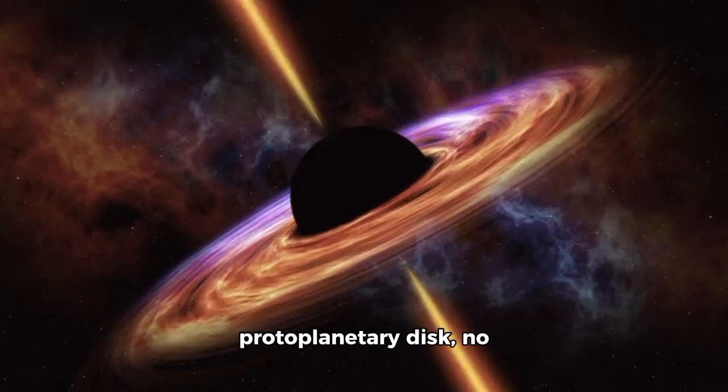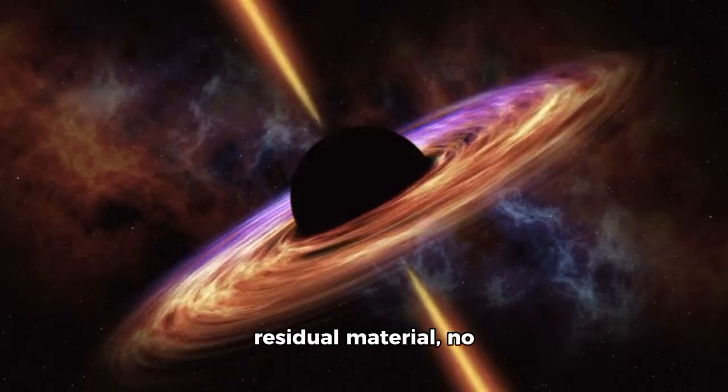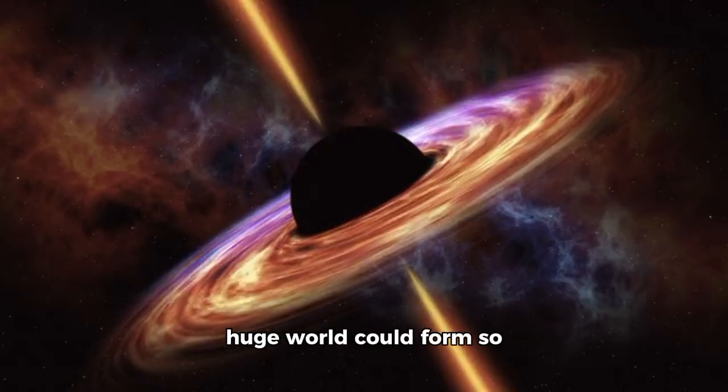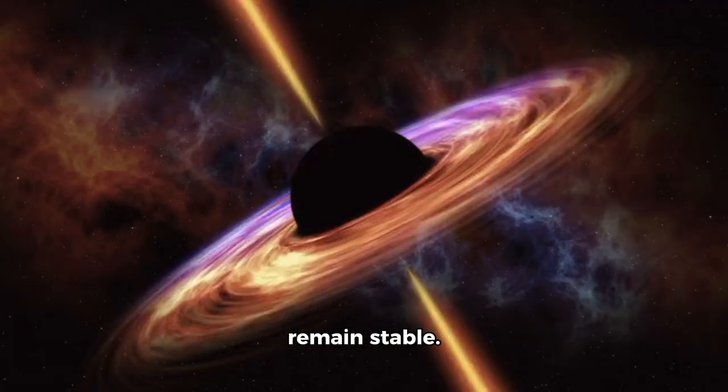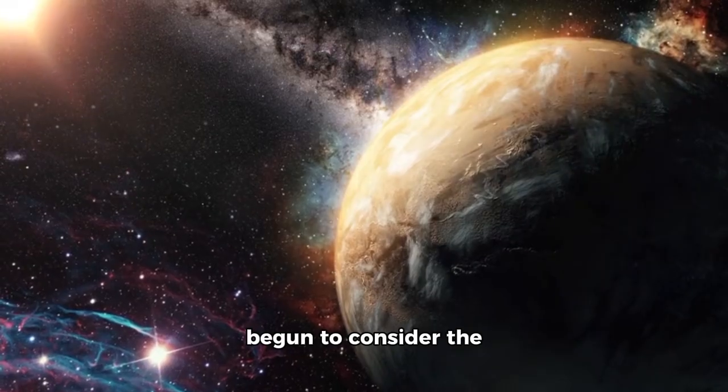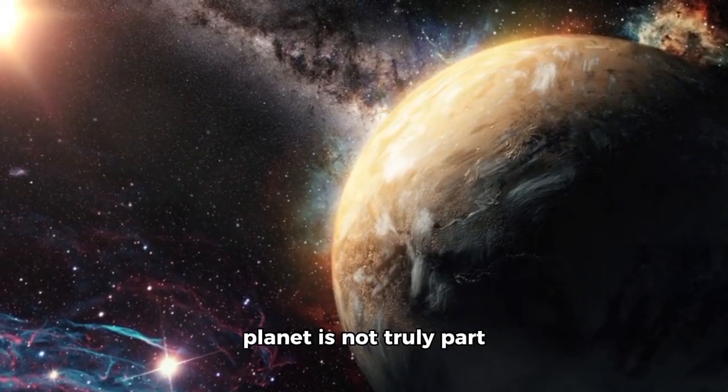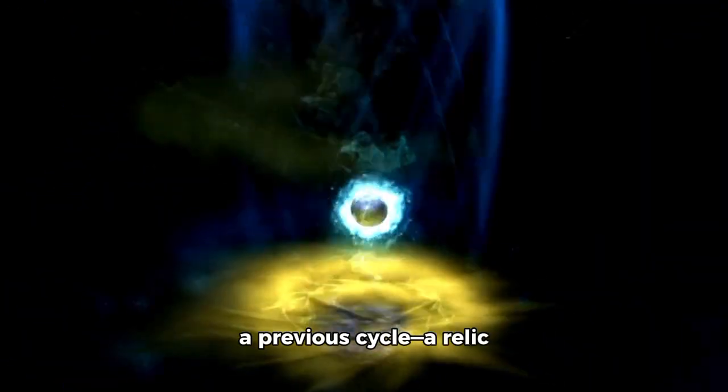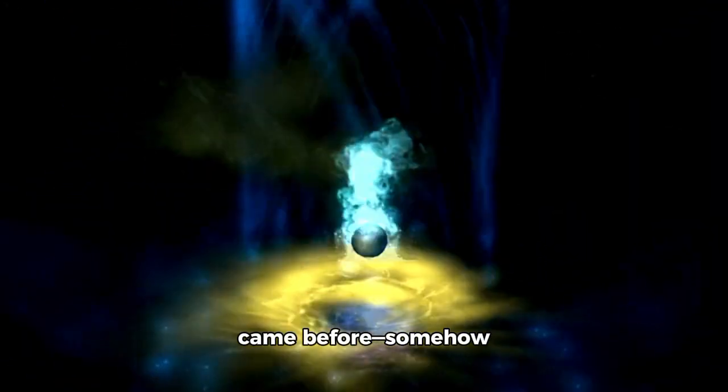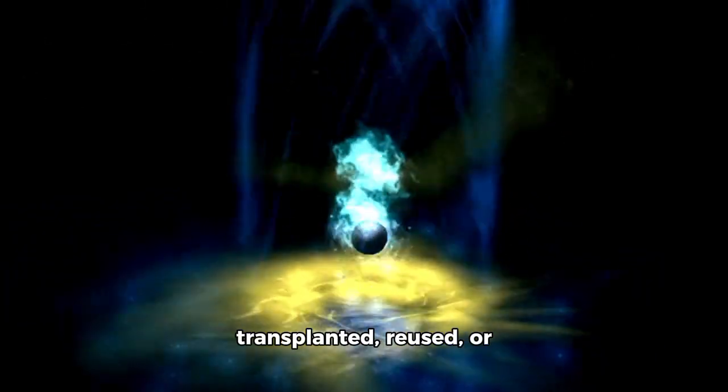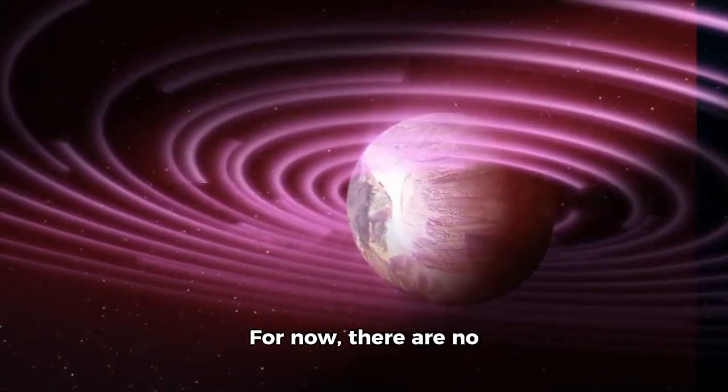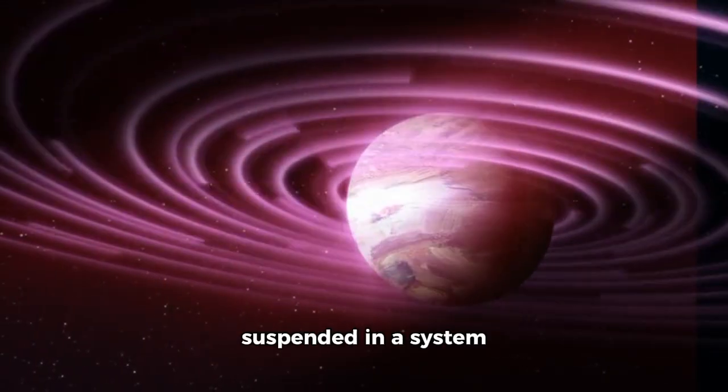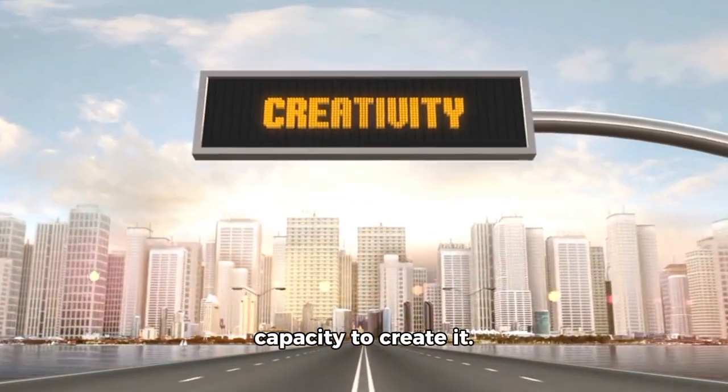There is no visible protoplanetary disk, no residual material, no gravitational cause explaining how such a huge world could form so far out, so quickly, and remain stable. Some scientists have begun to consider the possibility that this planet is not truly part of its current system. What if it's a remnant of a previous cycle, a relic from a star system that came before, somehow transplanted, reused, or strategically placed? For now, there are no answers—merely a planet glimmering at over 1,000 degrees, suspended in a system that lacked the capacity to create it.